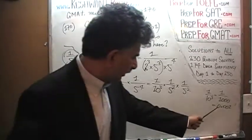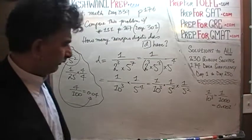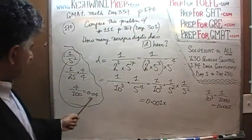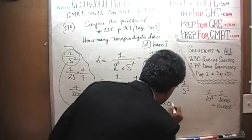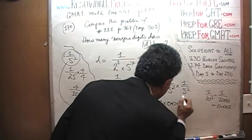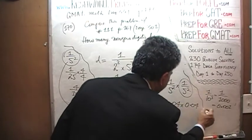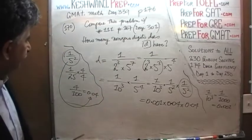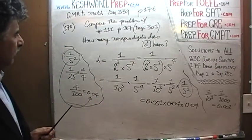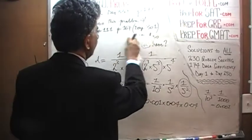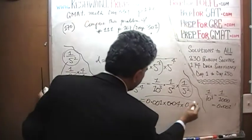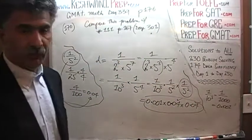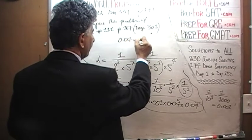So we end up with 0.001 times 1/5², which we just found is 0.04, times another 0.04. We are almost done — we have to find the product of these three quantities. First, we need to figure out 0.04 times 0.04. 4 times 4 is 16.